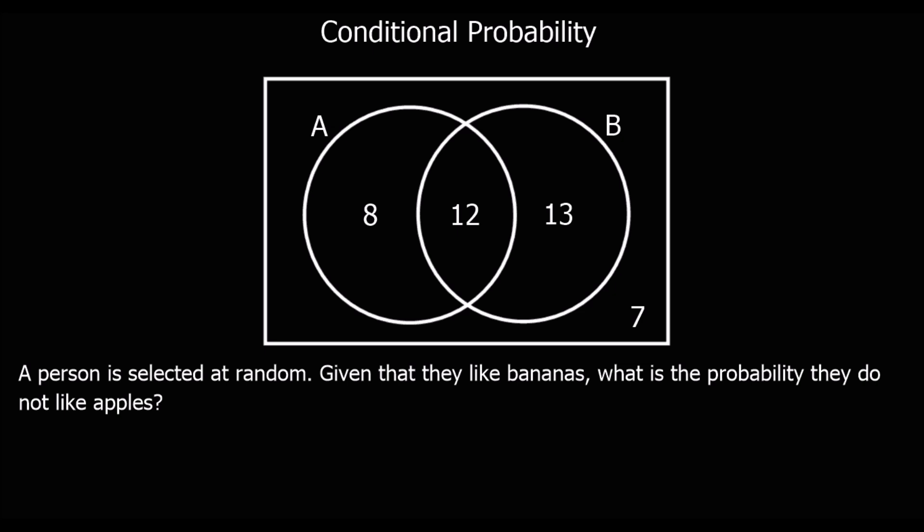Okay, so here we've got a person selected at random, given that they like bananas, what's the probability they do not like apples?